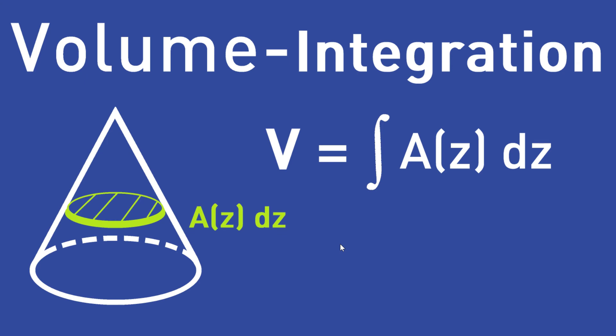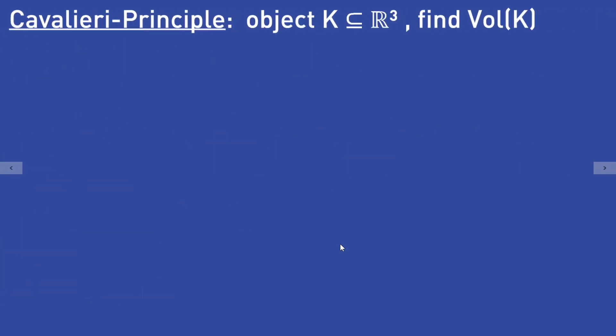Cavalieri's approach is a method to calculate the volume of three-dimensional objects by using integration. Let's take a look at that approach. Let's assume you have some object K in R3 and you want to find the volume of that object K.